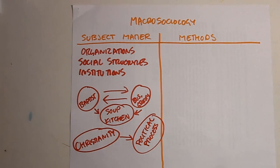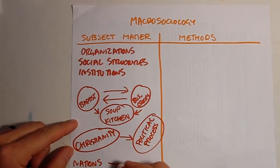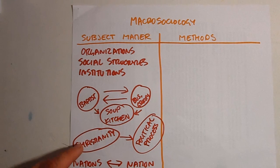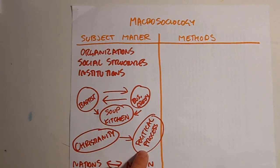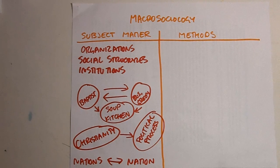We can take this one step further and look at the way that nations interact with each other. A nation is made up of a wide variety of institutions and social structures — religions, political groups, business groups, and others all come together under one banner, one identity, as a nation. Macro-sociologists are interested in how this happens.